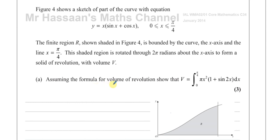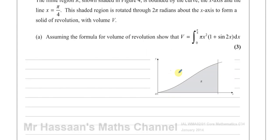Assuming the formula for volume of revolution, show that v equals the integral between 0 and pi over 4 of pi x squared times (1 plus sine 2x) with respect to x. So we have to take this two-dimensional area and rotate it around the x-axis — it kind of wraps around the x-axis, comes outside of the page, goes all the way down and back inside the page all the way around until it's made a whole revolution. It becomes three-dimensional.